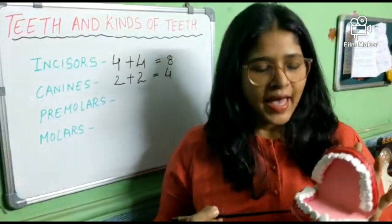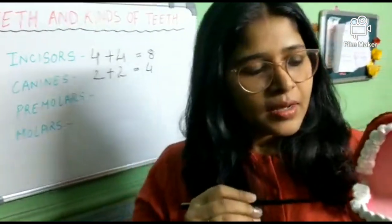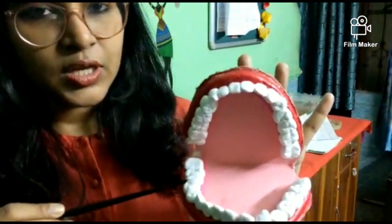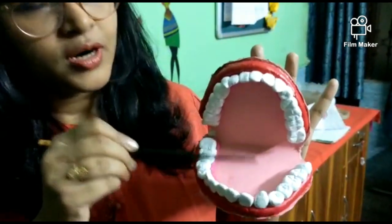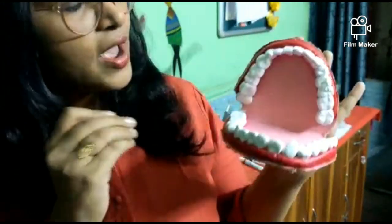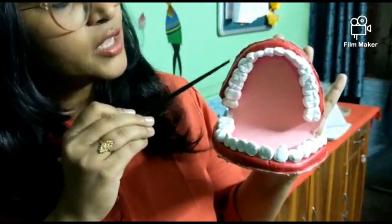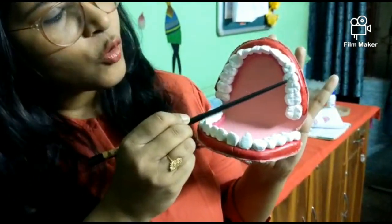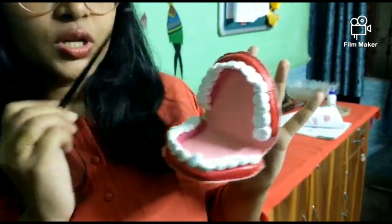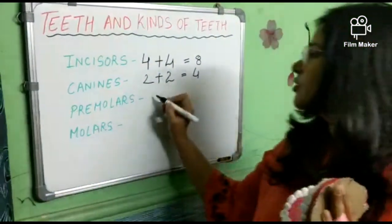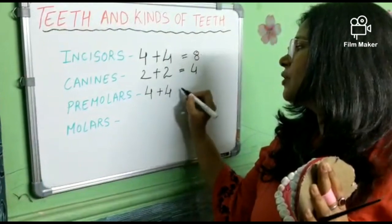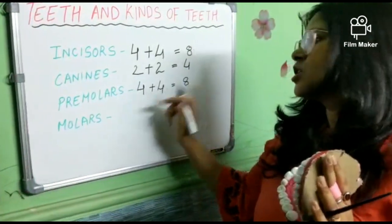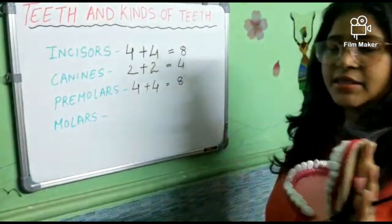After canines, we have premolars. As you can see, there are four in the lower jaw and four in the upper jaw. So total, how many do we have? Four plus four makes eight — premolars are eight in number.